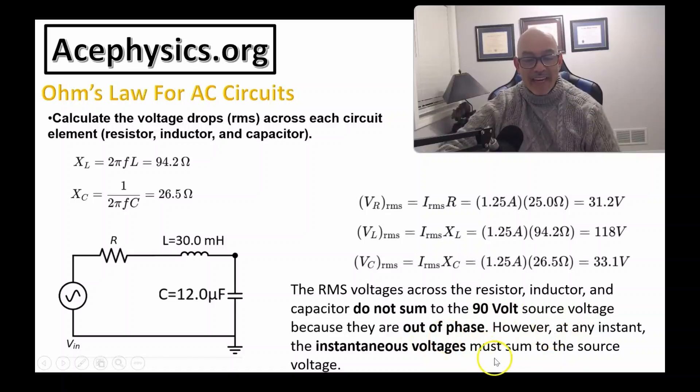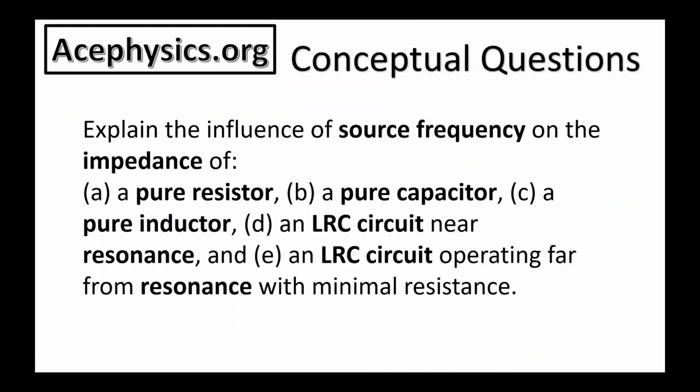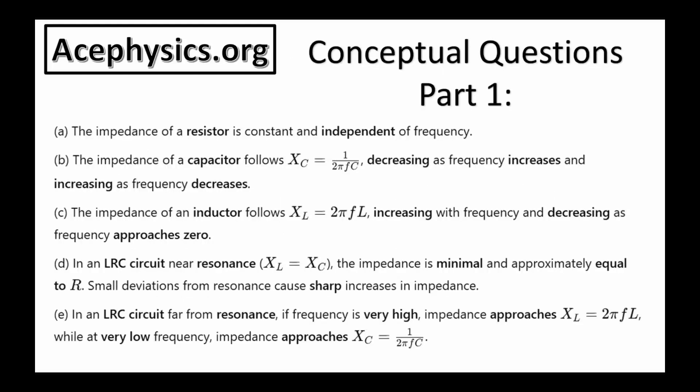To finish up, some conceptual questions tying together today's concepts: explain the influence of source frequency on the impedance of a pure resistor, a pure capacitor, a pure inductor, an LRC circuit near resonance, and an LRC circuit operating far from resonance. The impedance of a resistor is independent of frequency. The impedance of a capacitor, 1/(omega·C), decreases as frequency increases. The impedance of an inductor, omega·L, increases with frequency. For an LRC circuit near resonance, the capacitive reactance equals the inductive reactance. Far from resonance, at very high frequency the impedance approaches the inductive reactance, and at very low frequency it approaches the capacitive reactance.